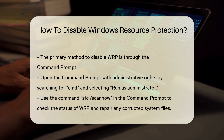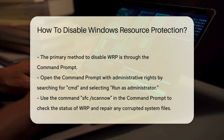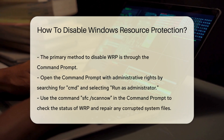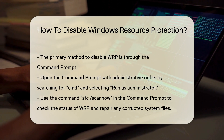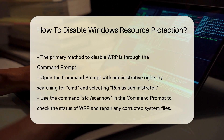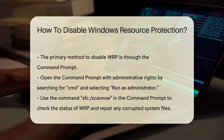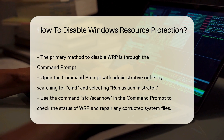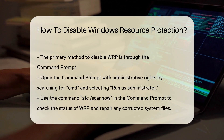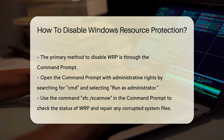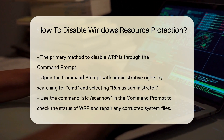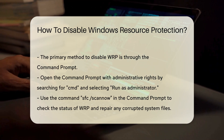The primary method to disable WRP involves using the command prompt. Open the command prompt with administrative rights. This can be done by searching for CMD in the Start menu, right-clicking, and selecting Run as Administrator.